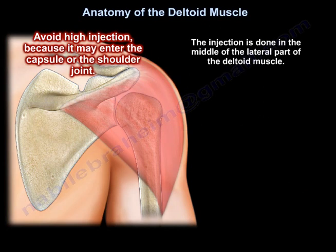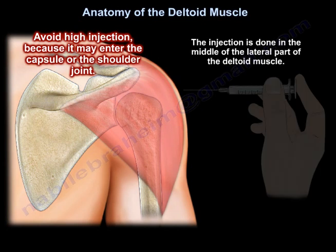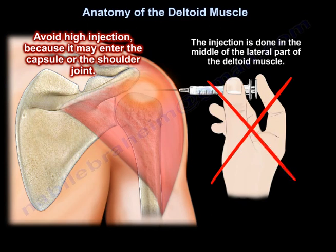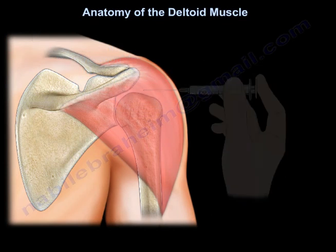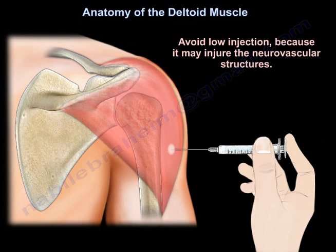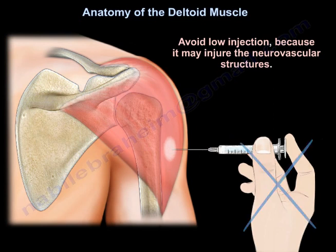Avoid a high injection because it may enter the capsule or the joint. Avoid a low injection because it may reach the neurovascular structures.